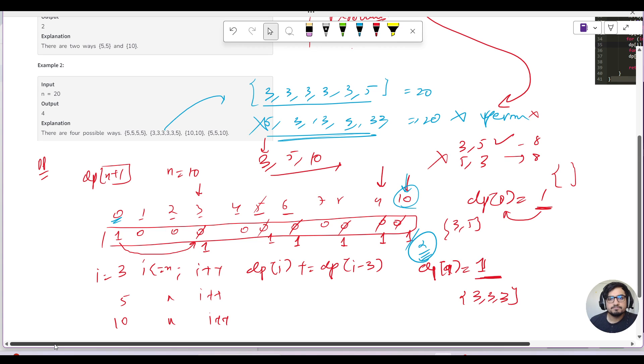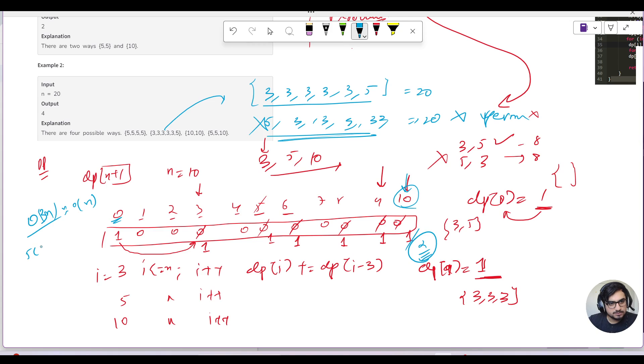What would be the time and space complexity for this code? O(n) because we are iterating three times here: you can see 3 to n, 5 to n, and 10 to n. So you can say strictly 3n, but ignoring the constant would be O(n). And space complexity again it would be O(n).